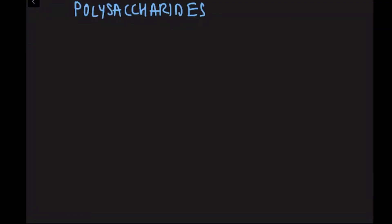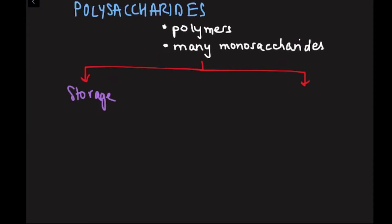Lastly, we have polysaccharides. These are polymers. This means that they're basically made of many monosaccharides. Polysaccharides serve two purposes. They serve as storage material that can be hydrolyzed for energy. And they also serve as building materials for cellular structures.